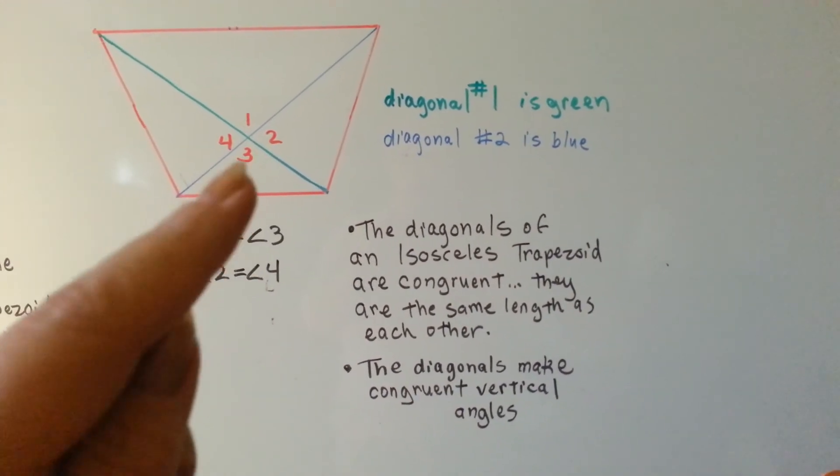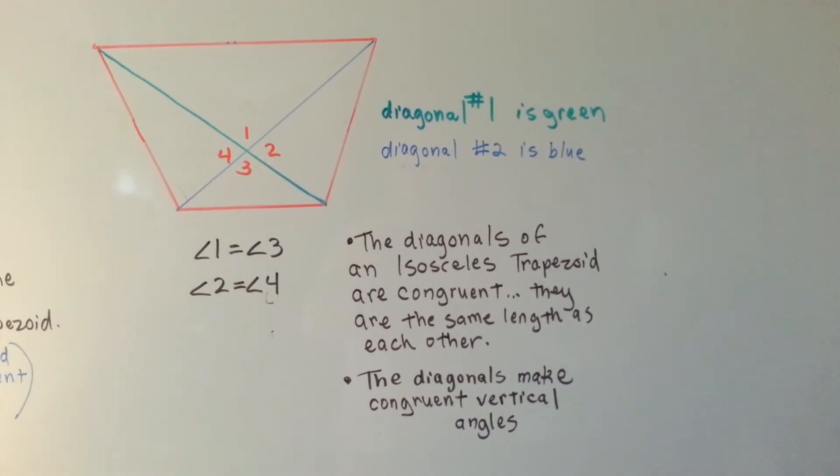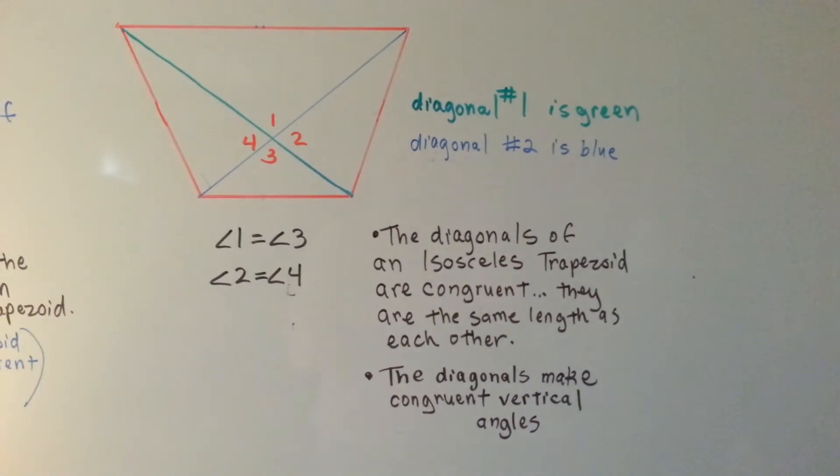Angle one and angle three are congruent to each other, and two and four are congruent to each other. Do you see that?